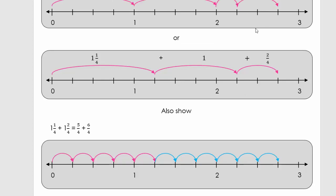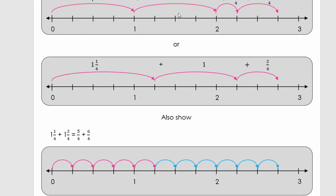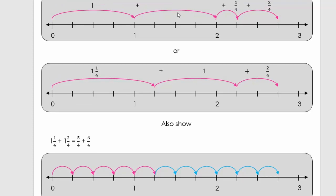Well done. Now we go to the third number line. I want you to look at your first number line, the second, and the third, and compare them. At the end, say to yourself which number line is the easiest for you to use. Pause it.